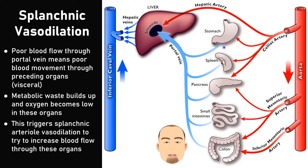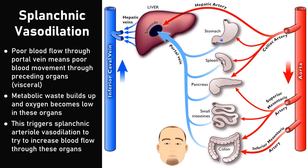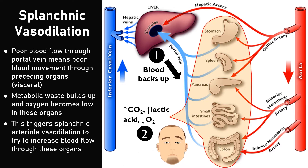That pressure backs up into the visceral abdominal organs: stomach, spleen, pancreas, small intestine, and large intestine. This generates a lot of pressure, but just as importantly, you can't clear out waste like CO2, and you can't bring in new oxygen. So blood backs up, CO2 builds up, lactic acid builds up, and oxygen is depleted.